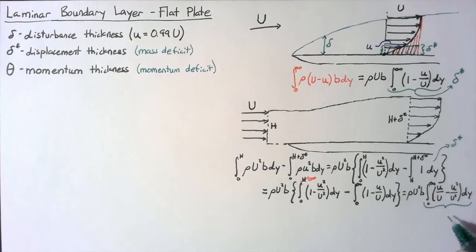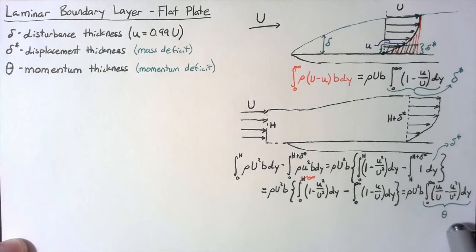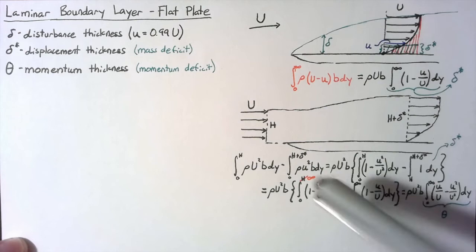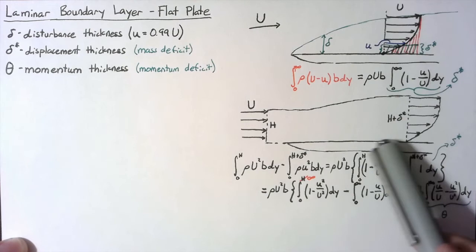And once again, this momentum thickness relates to the momentum deficit due to our boundary layer. What this means is we need an additional theta worth of height in order to get the extra momentum that's lost due to the shear stress on the surface of our flat plate.